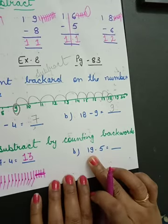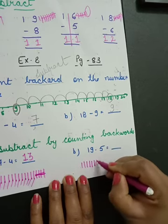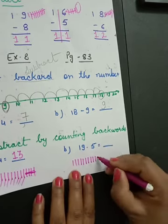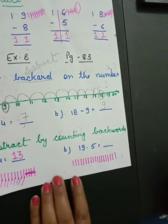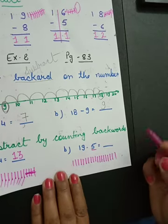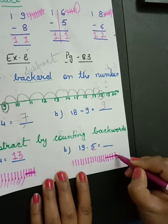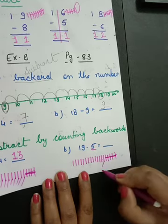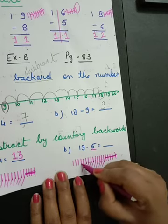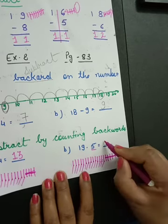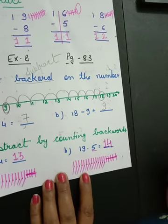Next: 19 lines you have to draw and cut 5 lines. Draw: 1 through 19. Now go backward and cut 5: 1, 2, 3, 4, 5. How many lines are remaining? 1, 2, 3, 4, 5, 6, 7, 8, 9, 10, 11, 12, 13, 14. Write it — 14. Got it all of you?